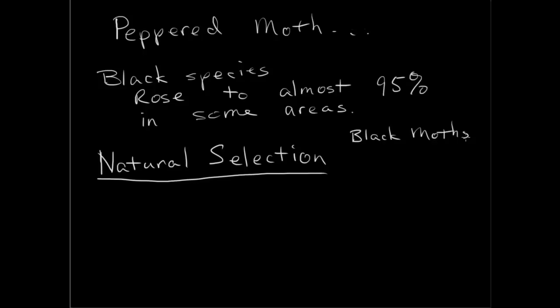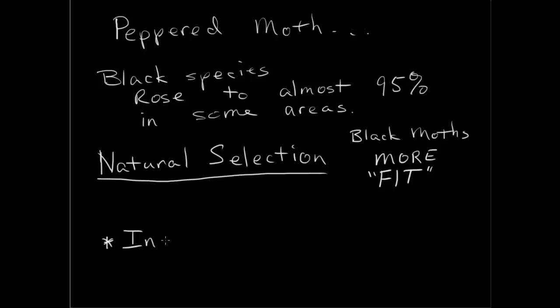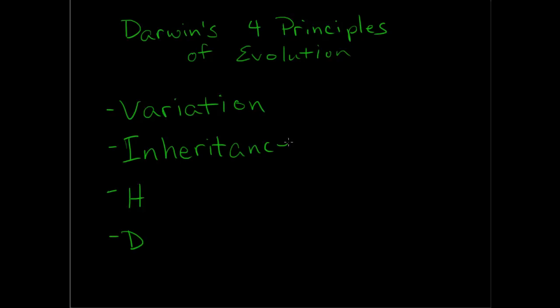This is an example of natural selection and it shows that the black moths were more fit, as they say. They were stronger; they had a characteristic that better fit their environment. This is also a rare example of industrial melanism. Industrial melanism is the idea that an organism will change its color through evolution, through a process, just because of the change in industry and the environment in which it lives.